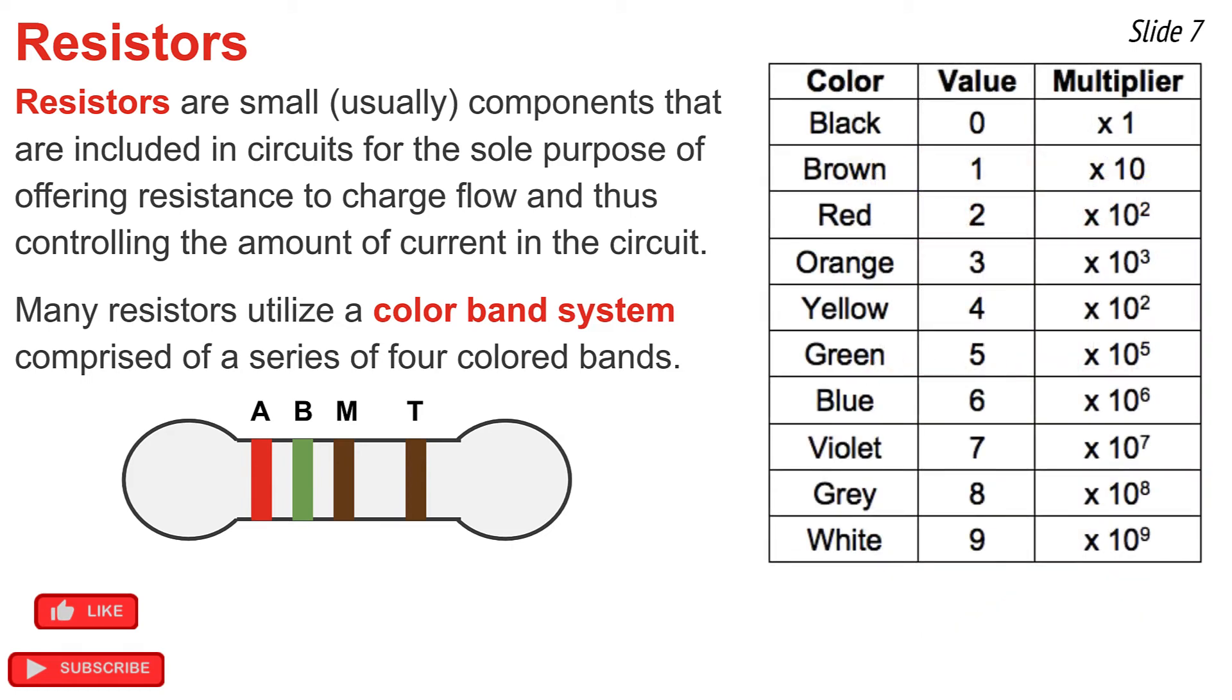Now I need a formula to help me to convert the colors into a resistance value. The formula goes like this. Resistance equal 10 times a plus b. Take that quantity and multiply by 10 to the nth. When you're done, you'll have a resistance value, but you have some degree of uncertainty in its value, a plus or minus t percent.